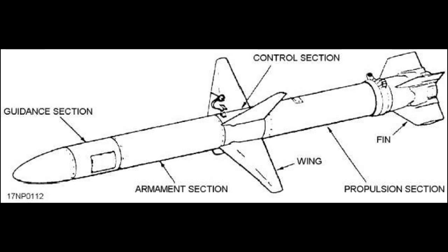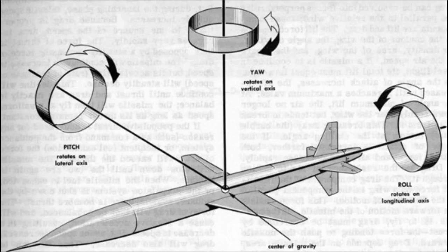The missile knows where it is at all times. It knows this because it knows where it isn't. By subtracting where it is from where it isn't, or where it isn't from where it is, whichever is greater, it obtains a difference or deviation.